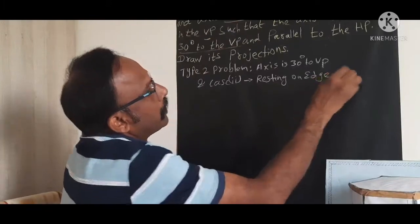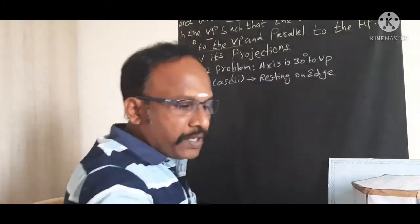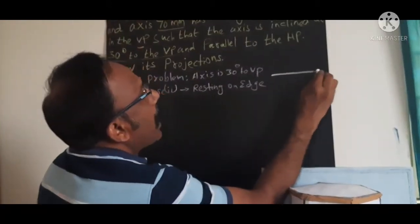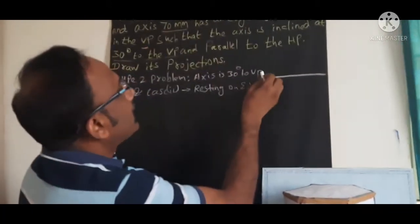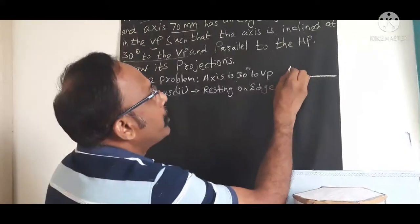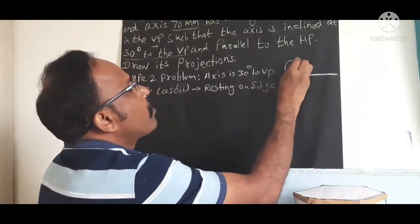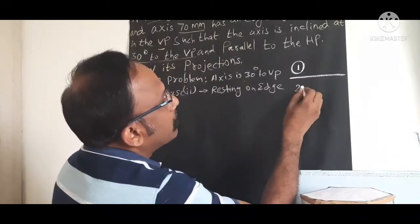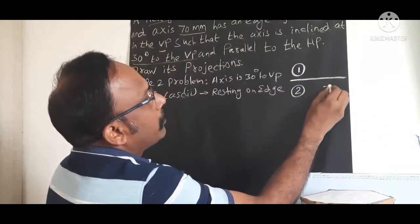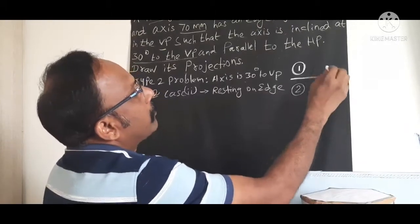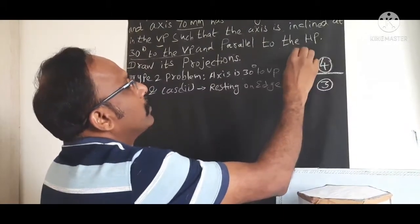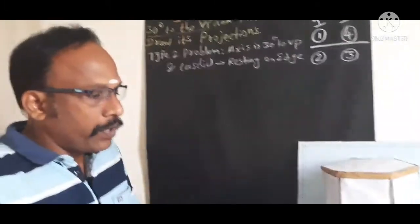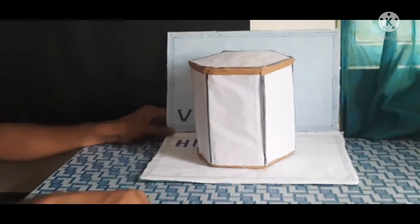Now we come to the solution approach. The axis is inclined 30 degrees to VP. For a type 2 problem, first draw the front view, then the corresponding top view, then the final top view, and finally complete the final front view. These are stage 1 and stage 2.